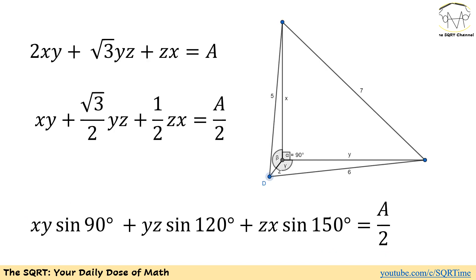Now let's evaluate 2xy + √3·yz + zx. Dividing by 2, we use sin(90°) = 1 for the xy term, sin(120°) = √3/2 for the yz term, and sin(150°) = 1/2 for the xz term. So the divided expression becomes xy·sin(90°) + yz·sin(120°) + zx·sin(150°), and evaluating this gives half of what we need to find.